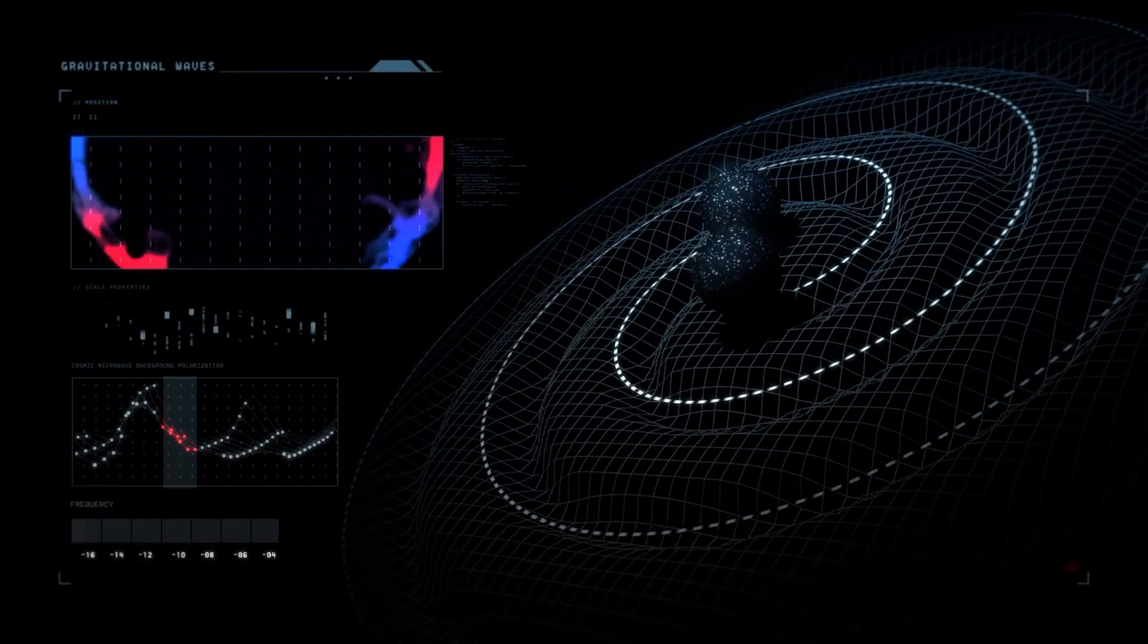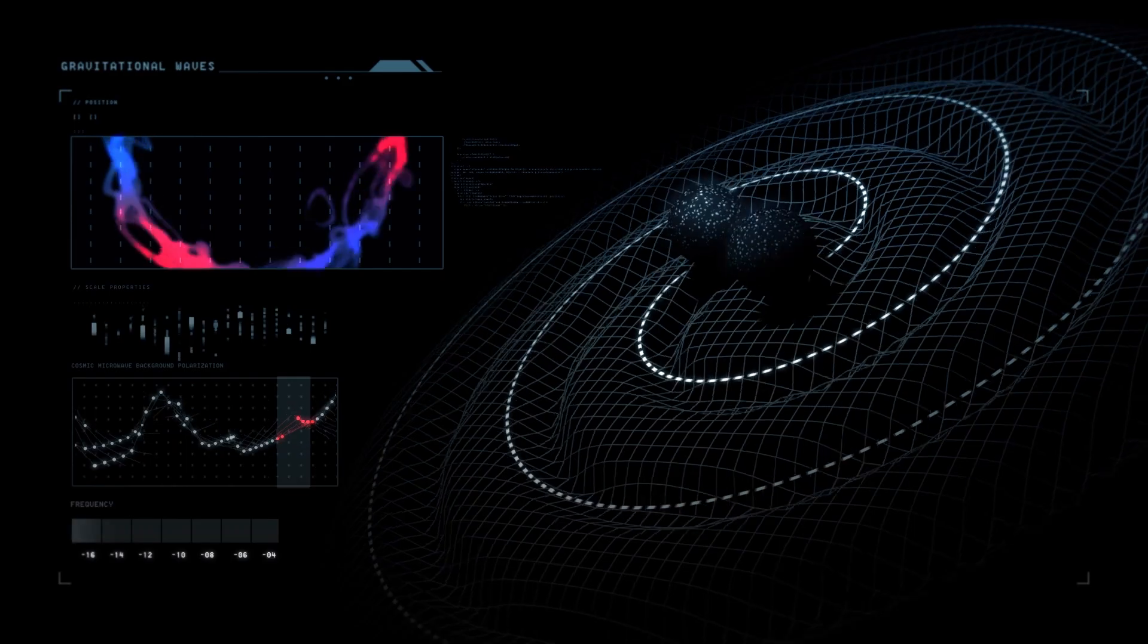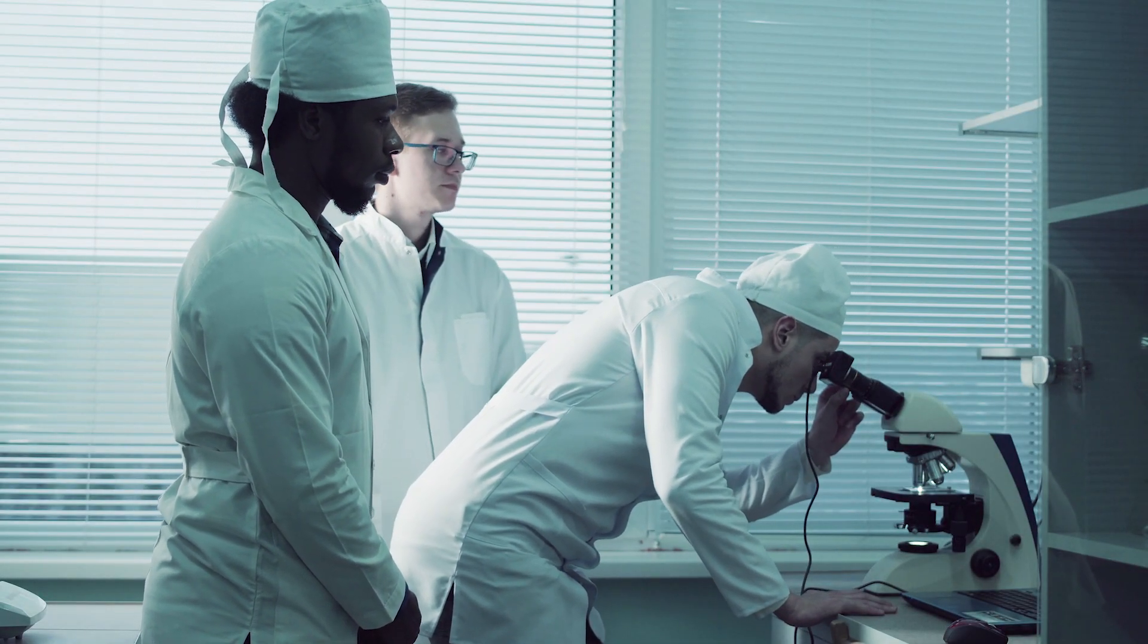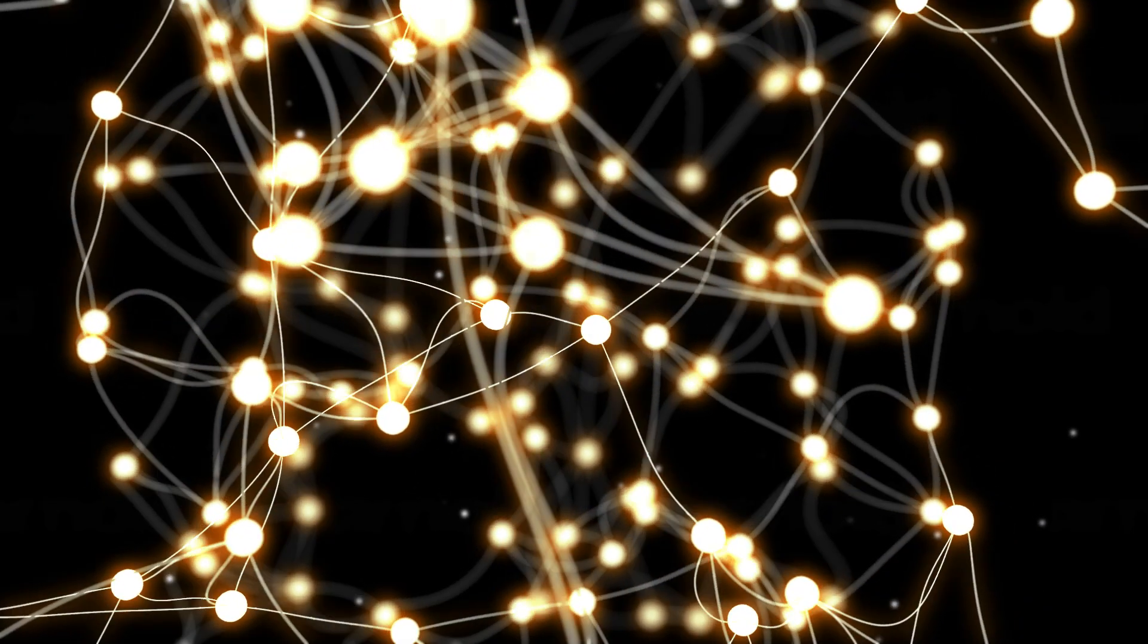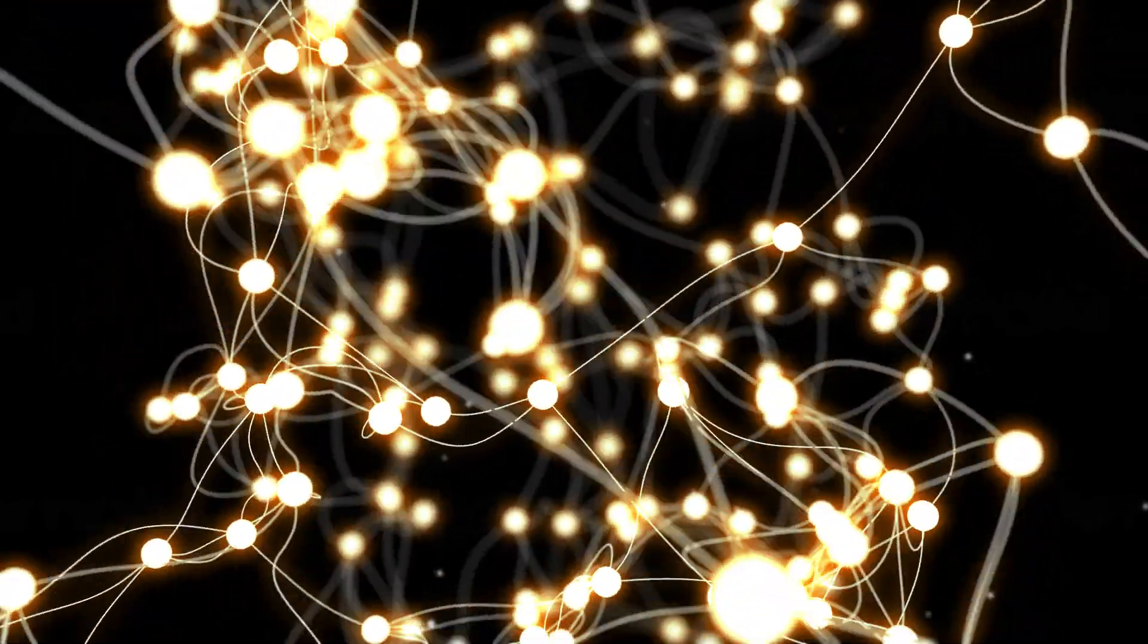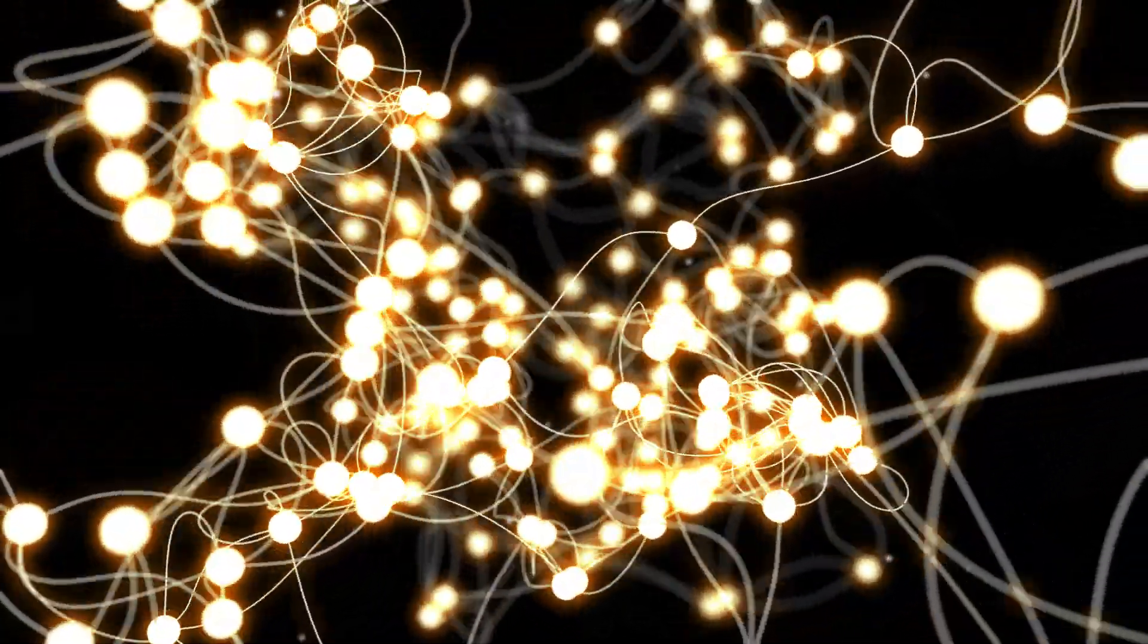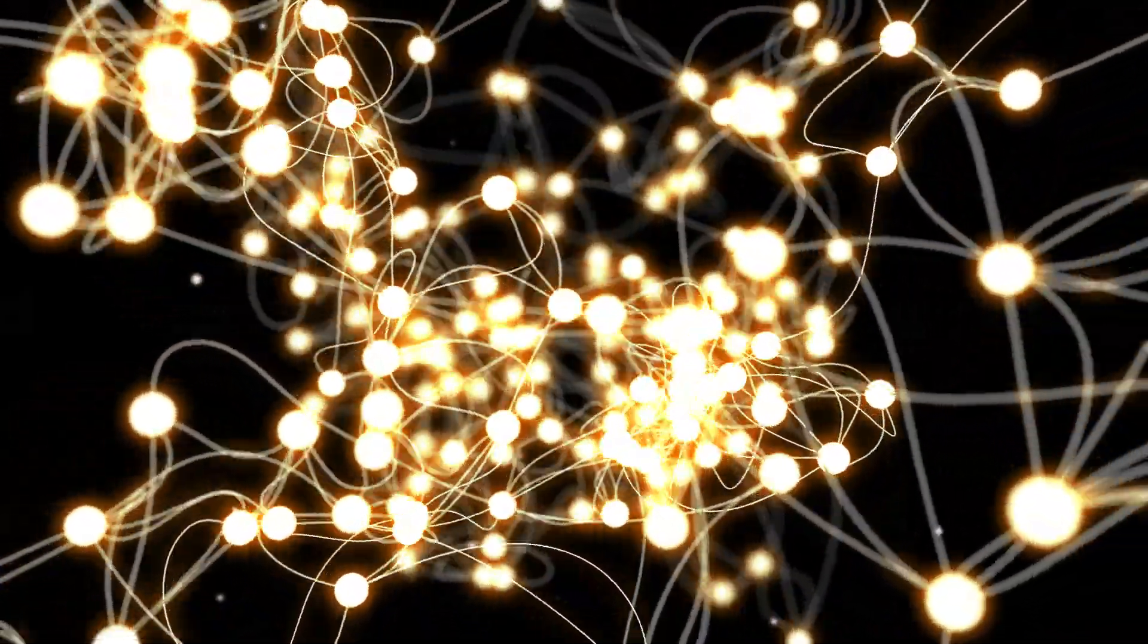Besides taming gravity, string theory was appealing because it promised to explain supposed fundamental constants like an electron's mass. Theorists hoped that the next step would be to find the appropriate way to explain the folding and movement of strings, that everything else would follow.